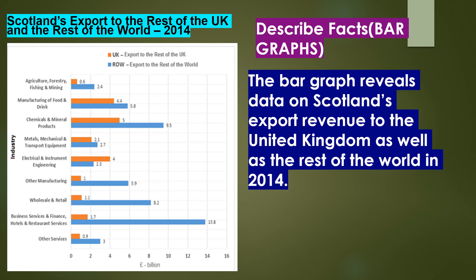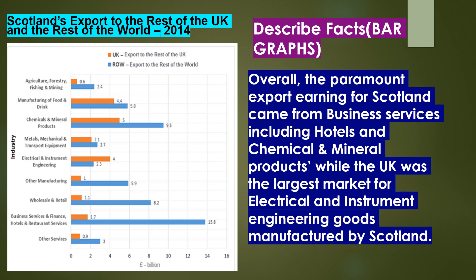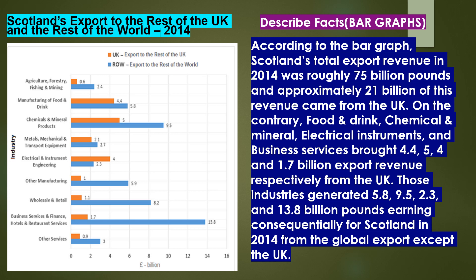Let me present an ideal answer that can help you score a good band. The bar graph reveals data on Scotland's export revenue to the United Kingdom as well as the rest of the world in 2014. Overall, the paramount export earning for Scotland came from business services including hotels, and chemical and mineral products, while the UK was the largest market for electrical and instrument engineering goods manufactured by Scotland. According to the bar graph, Scotland's total export revenue in 2014 was roughly 75 billion pounds and approximately 21 billion of this revenue came from the UK.